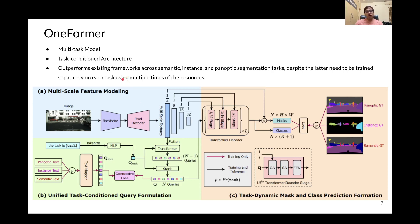OneFormer is a multi-task model with a task-conditioned architecture, and is able to outperform existing frameworks across semantic, instance, and panoptic segmentation, despite the existing works needing to be trained separately on each task, which use multiple types of resources.